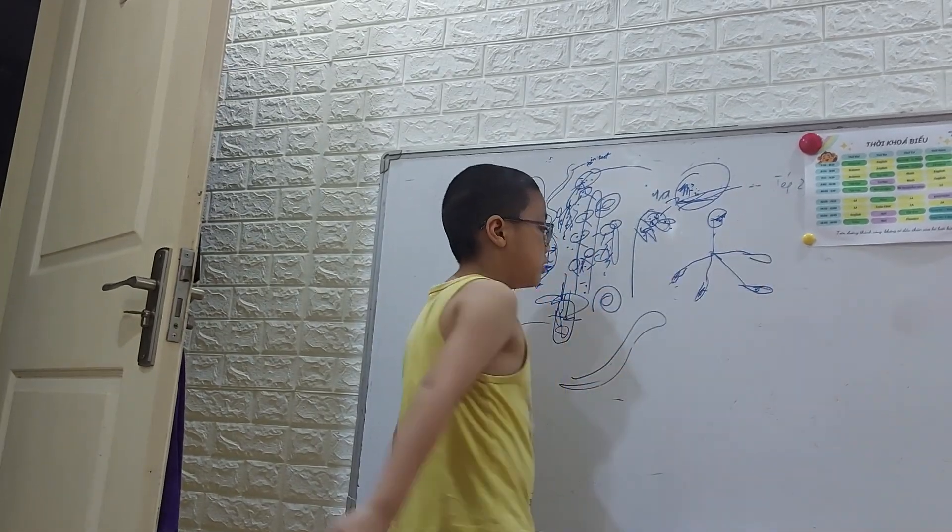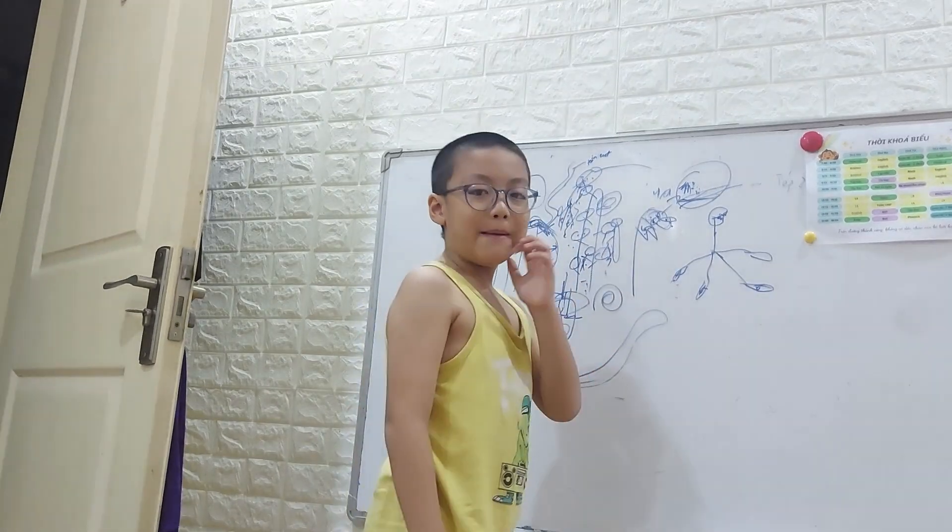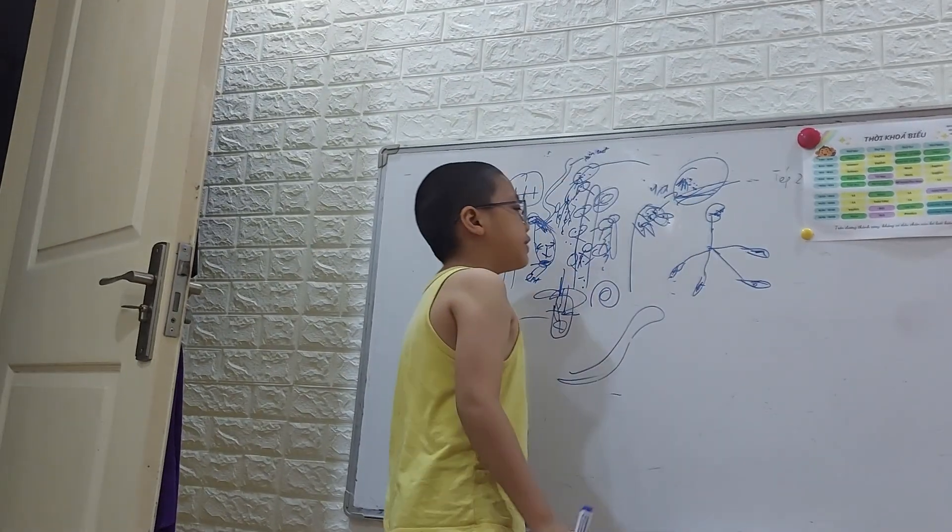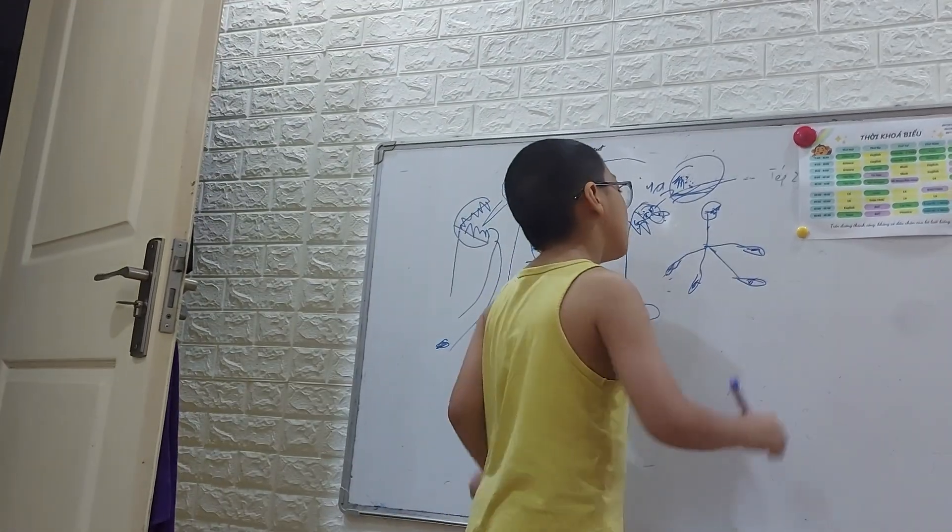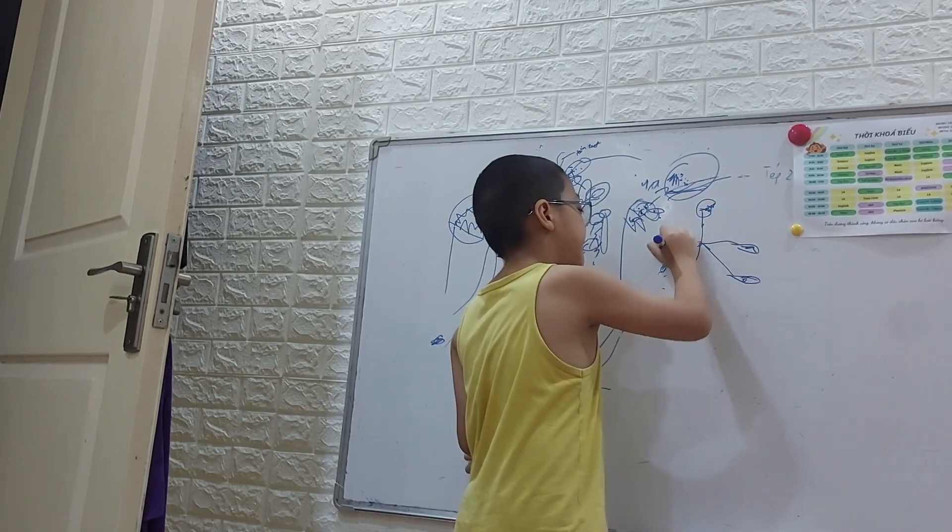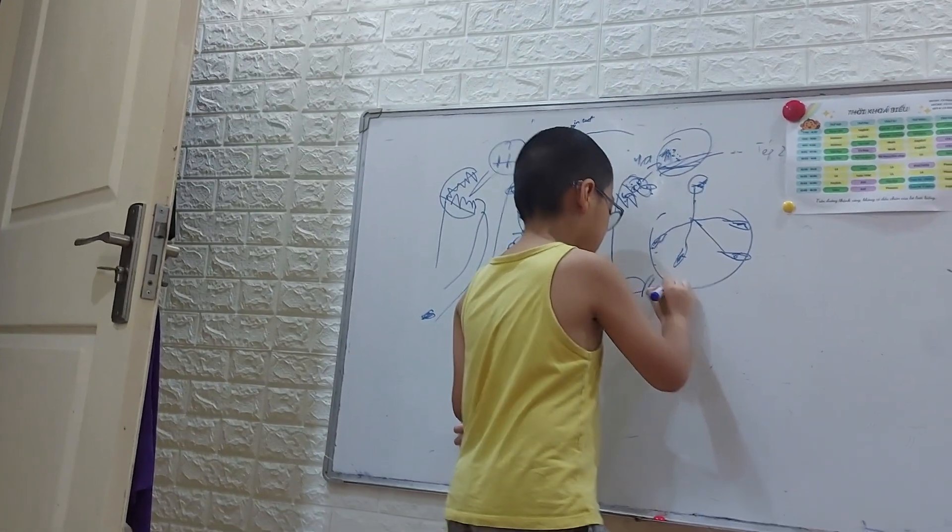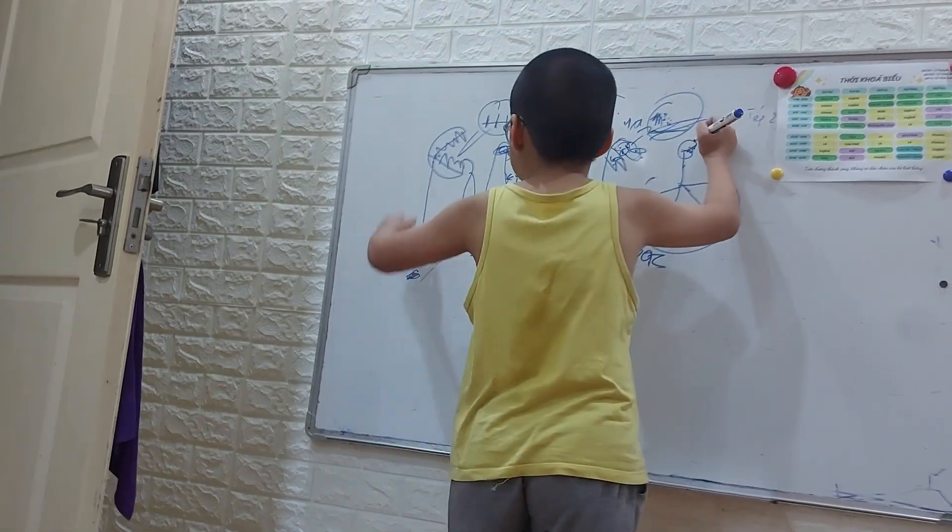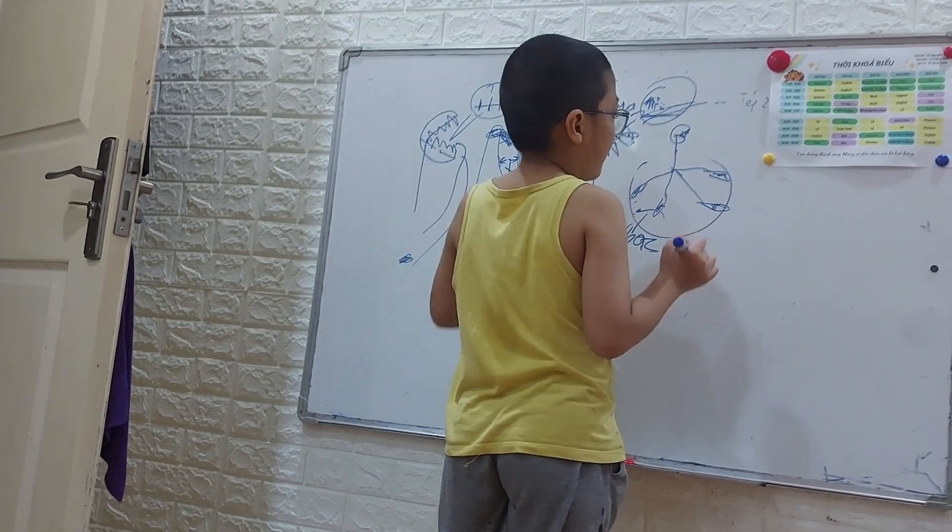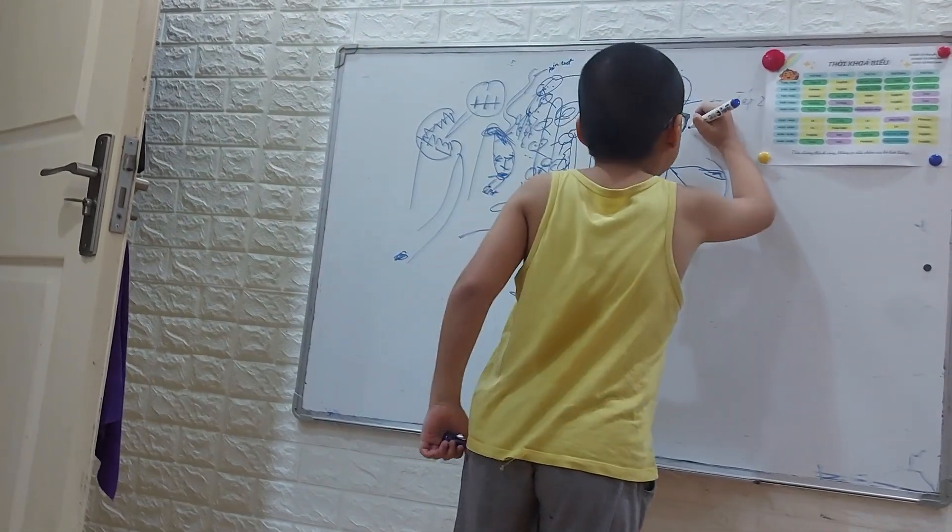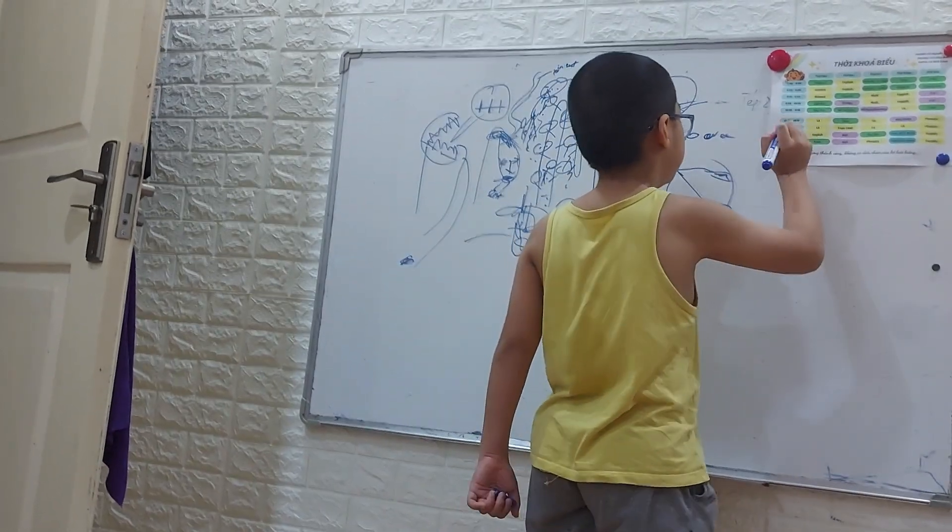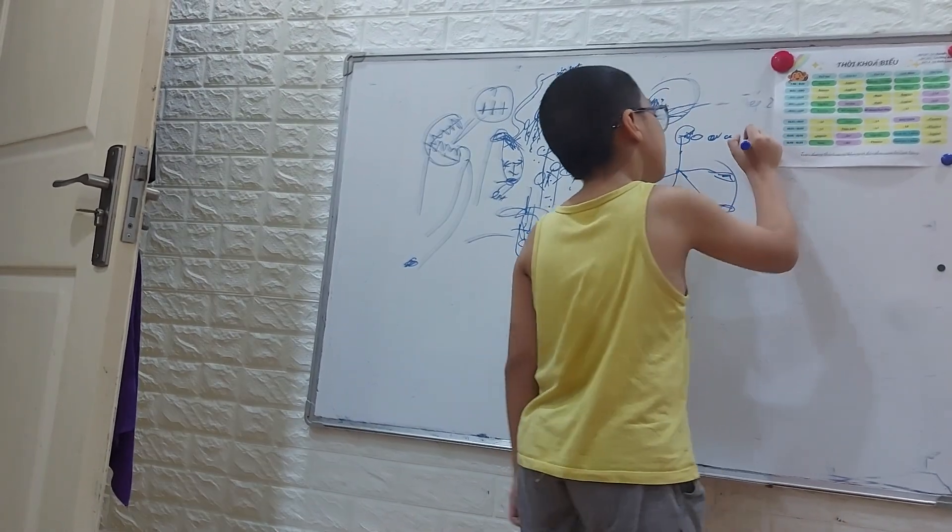The bladderwort, which can catch insects in two seconds. So these are the roots and this is a head. It looks like a Venus flytrap head. And it sometimes eats small animals like small fish and other things too.